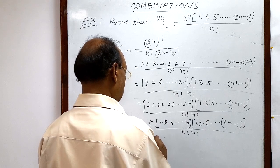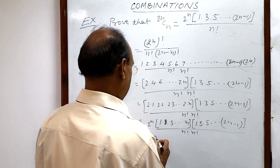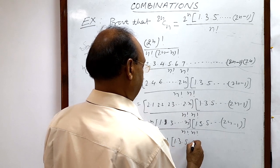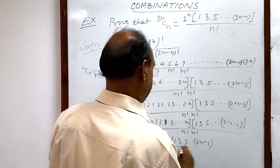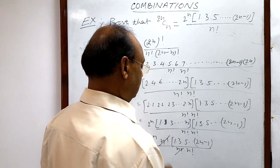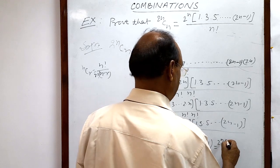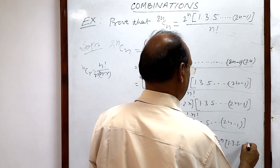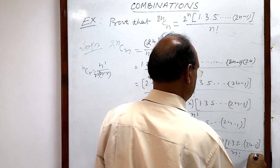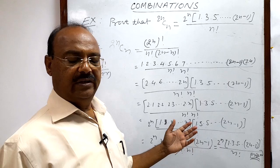Now we will get the result. We have 2 to the power n, and 1 into 2 into 3 up to n is simply n factorial. So this is 2 to the power n into n factorial, into 1 into 3 into 5 up to (2n minus 1), divided by n factorial into n factorial. This n factorial cancels out, and after that we get the result: 2 to the power n into 1 into 3 into 5 up to (2n minus 1), divided by n factorial. This is the right-hand side — hence proved. Very simple.